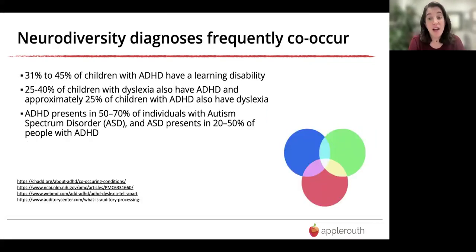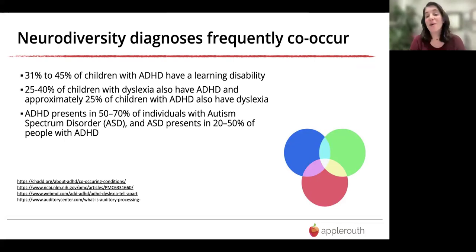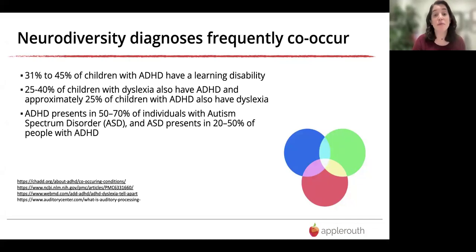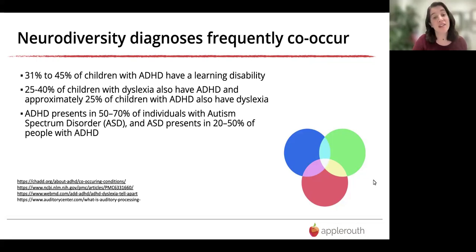Neurodiversity diagnoses frequently co-occur. If you've got ADHD, you may also have a learning disability — there's an overlap of between 31 to 45 percent. If you have dyslexia you may also have ADHD, and vice versa. There's also a wide overlap with autism spectrum disorder. A lot of these diagnoses are not in a silo — they're affected by other things going on, which makes sense because the brain is very complex.